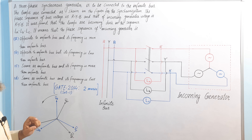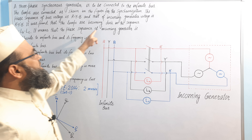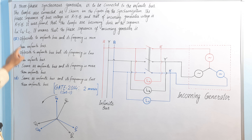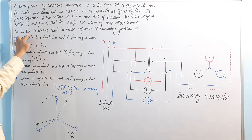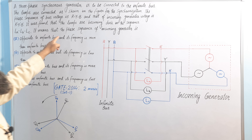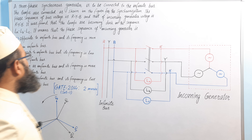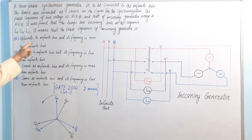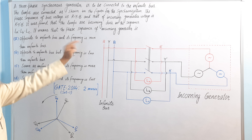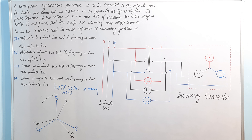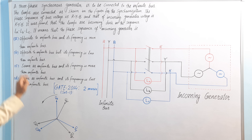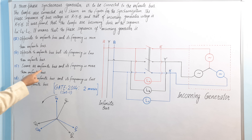It was found that the lamps are becoming dark in the sequence La, Lb, Lc. The question asks what this means. Option A: phase sequence of incoming generator is opposite to the infinite bus and its frequency is more than the infinite bus. Option B: opposite to infinite bus but frequency is less. Option C: same as infinite bus and frequency is more.